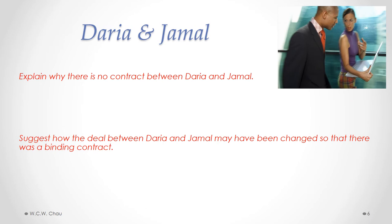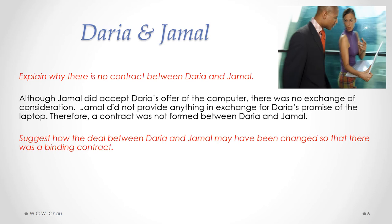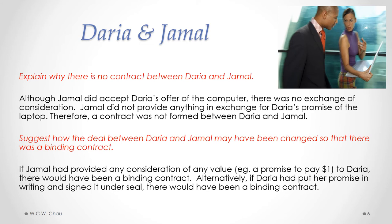In our scenario, the first question is: explain why there is no contract between Daria and Jamal. Although Jamal did accept Daria's offer of the computer — so there was offer and acceptance and therefore an agreement — there was no exchange of consideration. Jamal did not provide anything in exchange for Daria's promise of the laptop. Therefore, a contract was not formed. The second question suggests how the deal may have been changed so that there was a binding contract. If Jamal had provided any kind of consideration of any value, even something as small as a promise to pay $1 to Daria, there would have been a binding contract. Or alternatively, if Daria had put her promise in writing and signed it under seal, there would have been a binding contract.